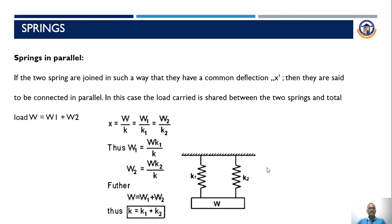For springs connected in parallel: if two springs are joined such that they have a common deflection X, they are said to be connected in parallel. The total load W = W1 + W2, and since both springs have the same deflection, X = W/K = W1/K1 = W2/K2. The total load equals W1 plus W2, and the equivalent stiffness equals the sum of the individual stiffnesses: K = K1 + K2.